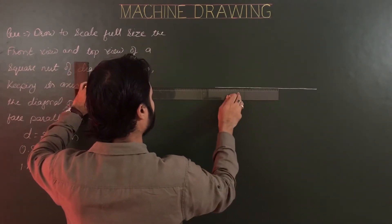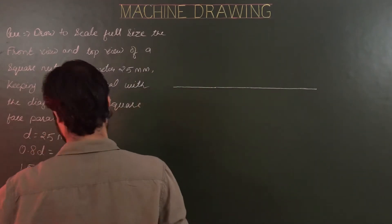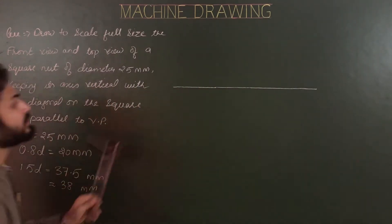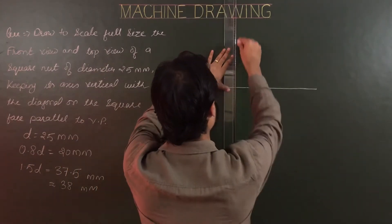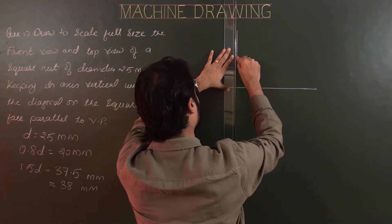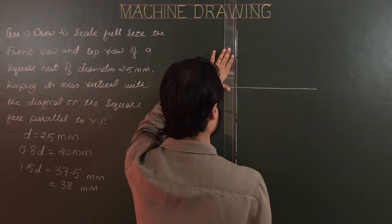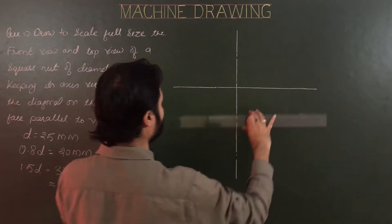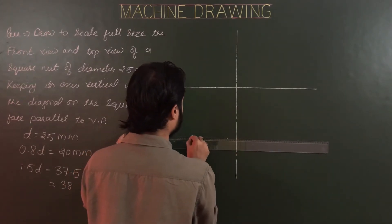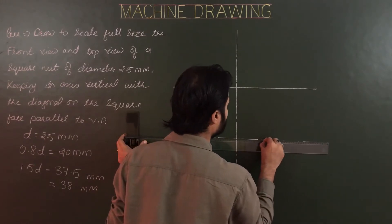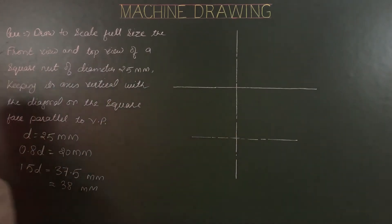For construction, first draw the XY line — this is your reference line for first projection. After the XY line, mark the axis for the front view, and drop a center line or another line parallel to XY from the center of the nut or center of the top view of the nut. This point is now the center of the nut.